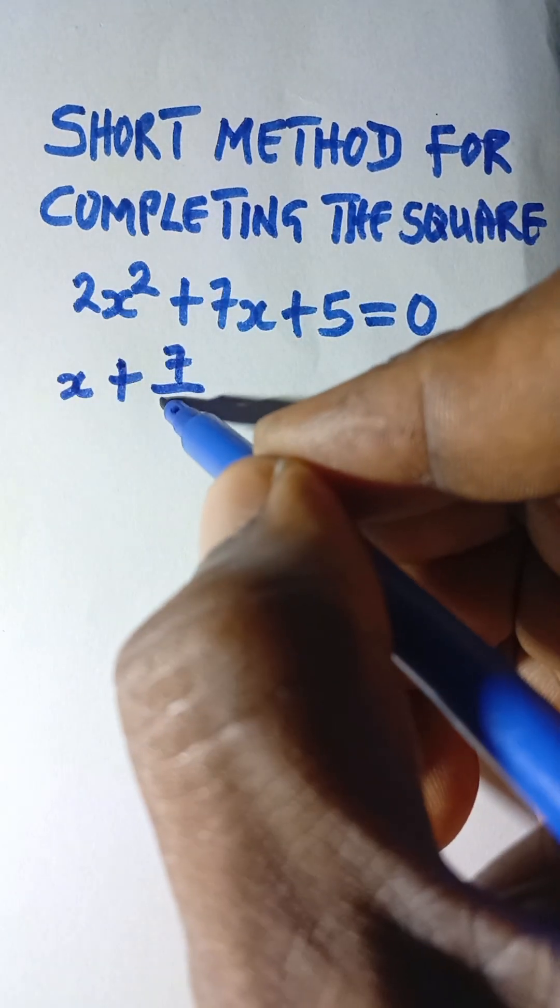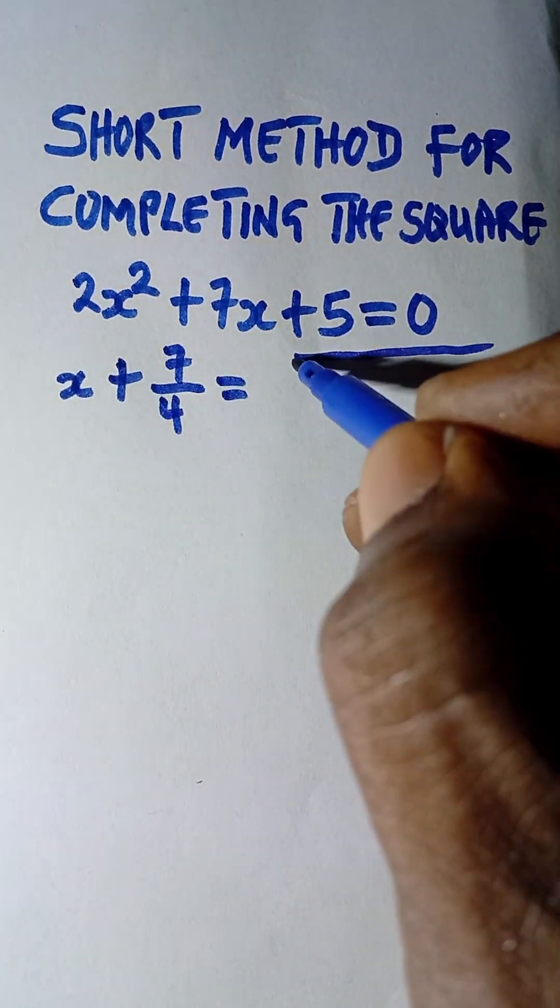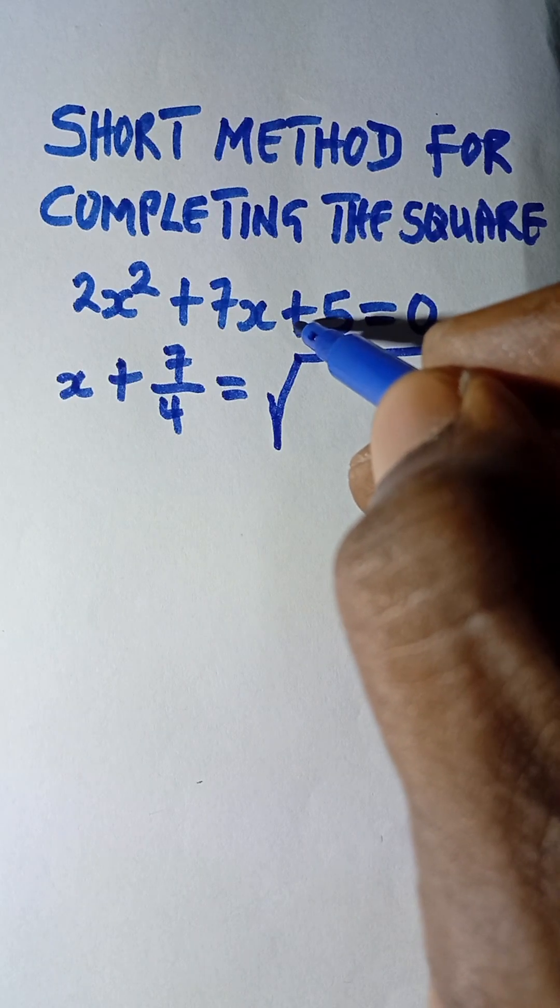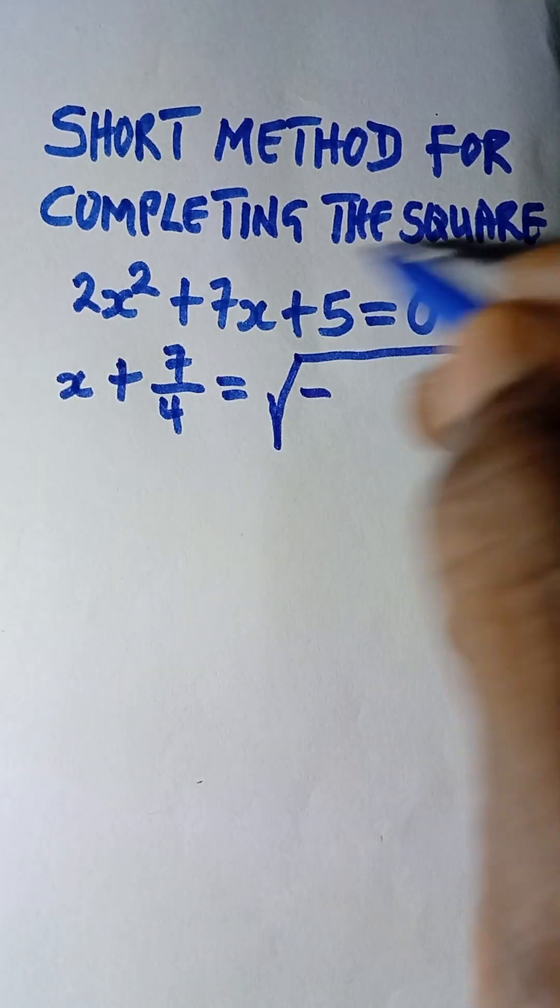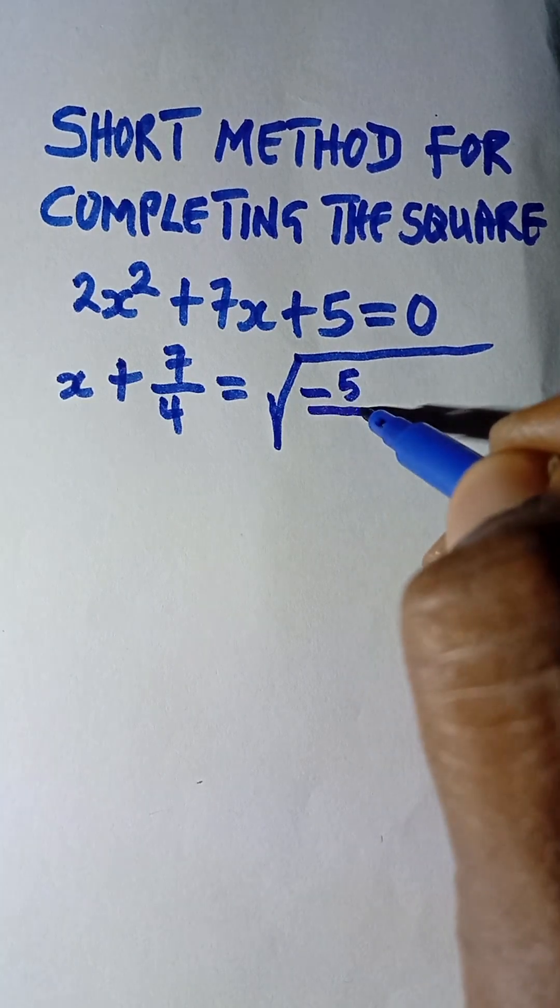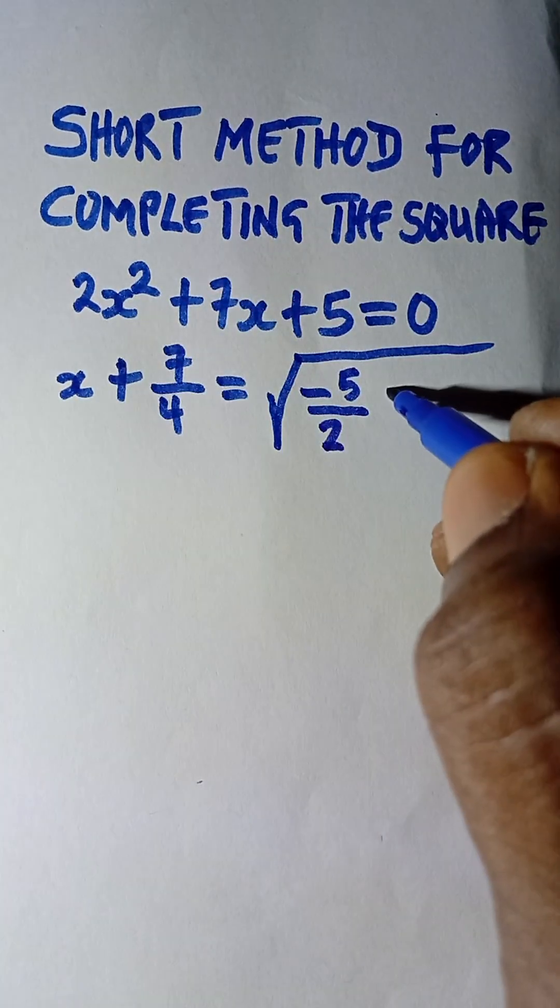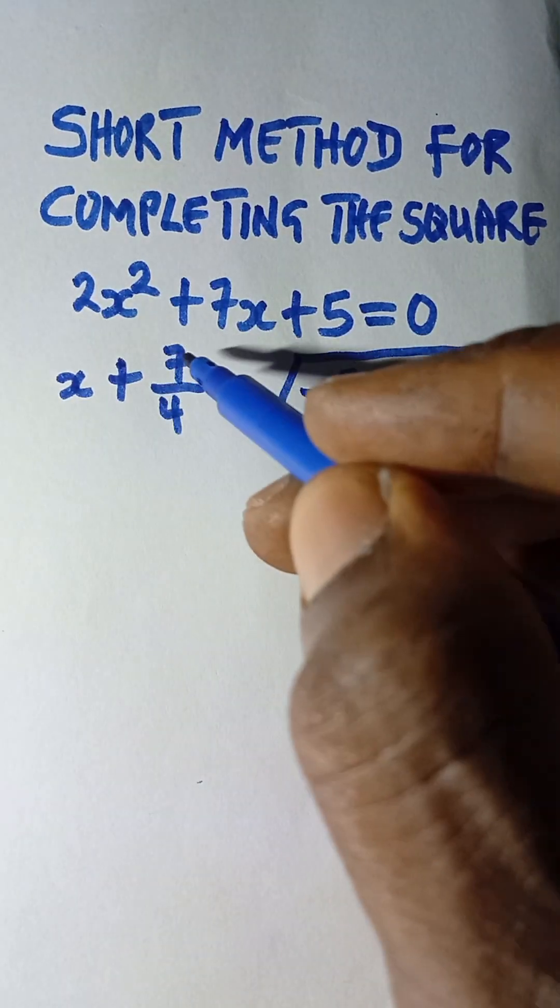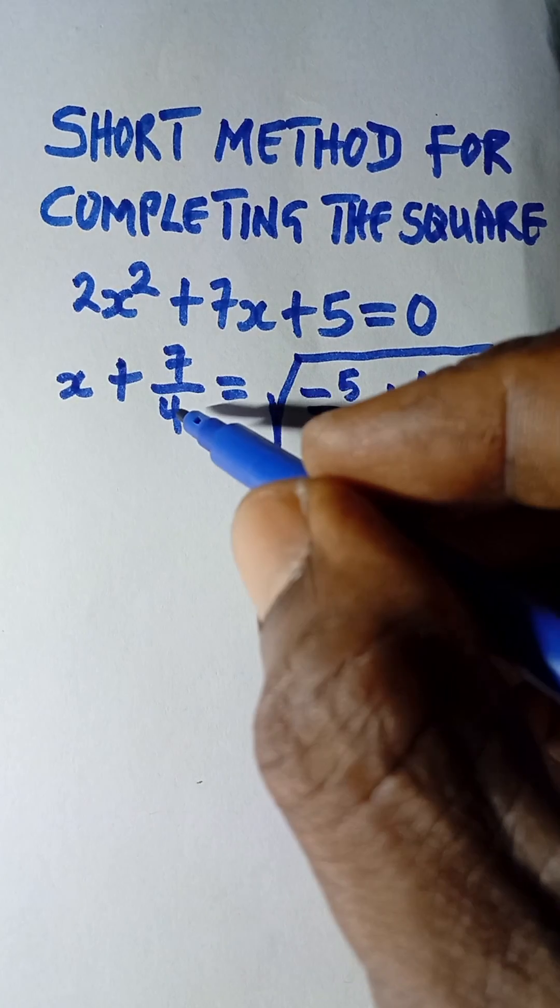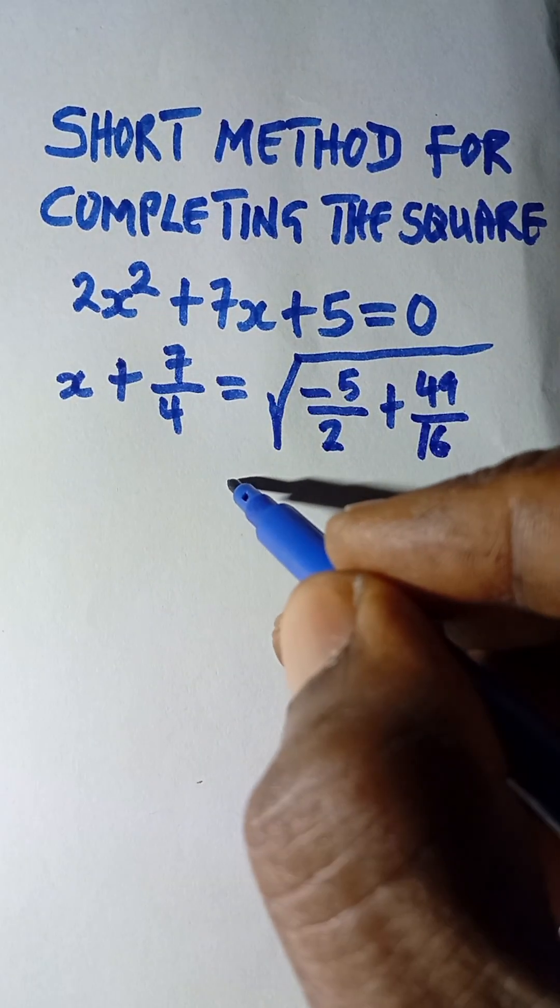And that should equal the square root. Make the overall square root of whatever sign here - you change it because it's coming to this side, so it becomes minus 5 divided by 2. Then plus, you square this value here. So 7 squared is 49, all divided by 4 squared which is 16.